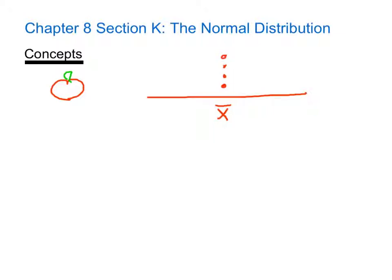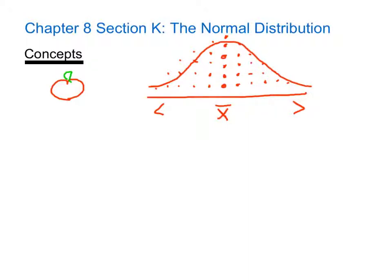A lot of the apples will weigh in right at that average, and we'll have quite a few apples — but slightly less — that are just greater than the mean weight, and about the same number that are just less. As we go farther out, we get fewer and fewer apples that are significantly greater or less in weight than the mean. If we fit a distribution curve to this dot plot, we see that it forms a nice bell-shaped curve, and these bell-shaped curves represent the normal distribution.